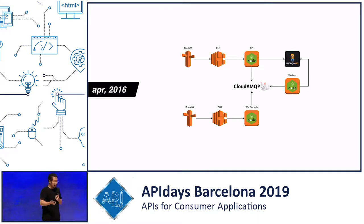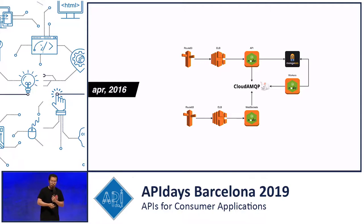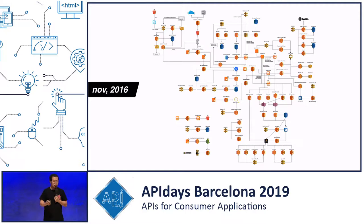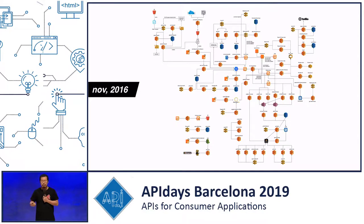When I joined Yubble in April 2016, I inherited a pretty standard monolithic application where you've got a couple of EC2 clusters doing different things, with some event-driven stuff happening already via Cloud AMQP. In a few months' time, with a very small team of five engineers, we migrated to an entirely serverless architecture where Lambda is the centerpiece that glued everything together.